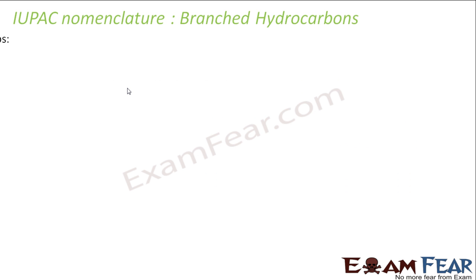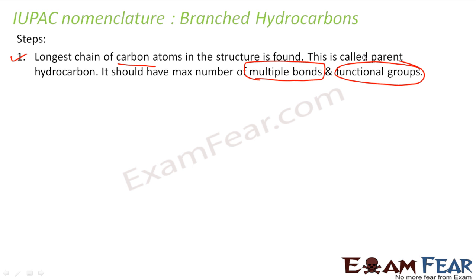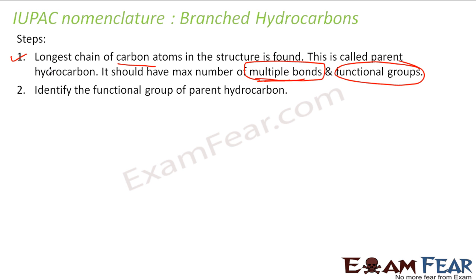Let's discuss the nomenclature of branched hydrocarbons. Here are some steps. First, you find the longest chain. The rule is that the longest chain should have the maximum number of carbon atoms, the maximum number of multiple bonds, and functional groups. Functional groups are something we will learn later, so you can ignore that part for now.